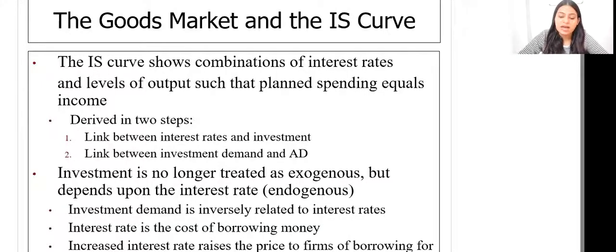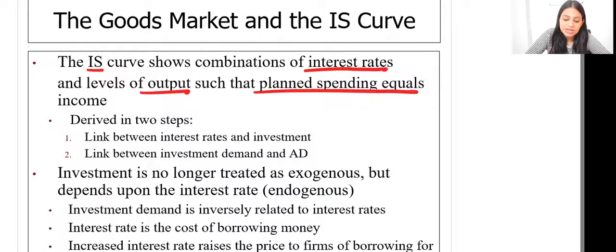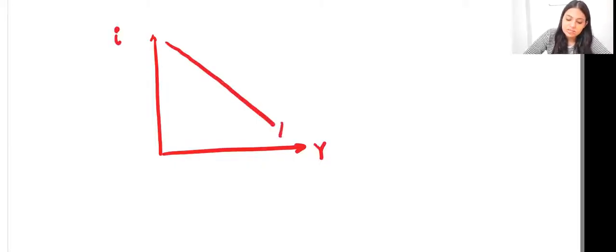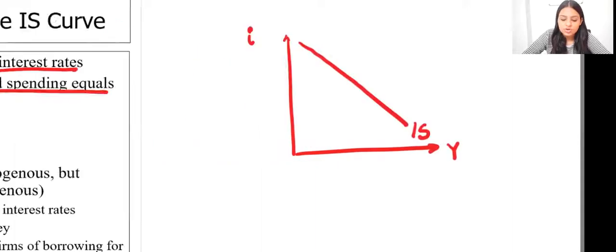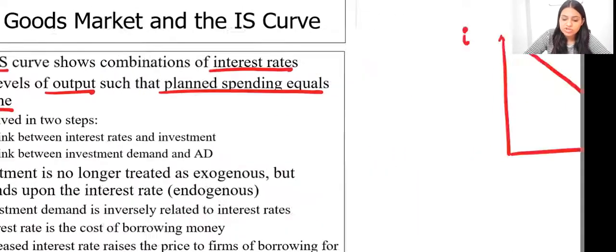Let's look at the goods market and the IS curve. The IS curve shows different levels of interest rate and output such that the planned spending is equal to income. Taking Y and I on the axes, this is the IS curve, showing different combinations of interest rates and output.